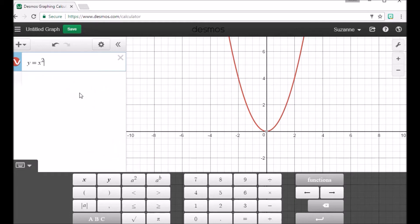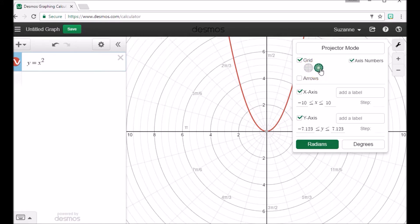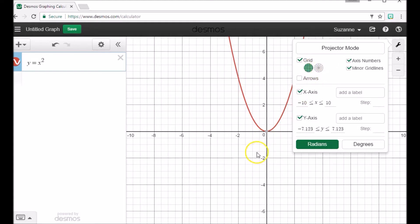So let's say we were going to graph the parent graph of the quadratic here. Now let's go over here to our settings. The grids—later in the course you'll be using the one on the right, that's the polar grid. For right now, pretty much mostly what you're going to use is the Cartesian grid. Now the axis numbers and the minor grid lines, you could uncheck those, but I probably wouldn't. Same thing with the x-axis and y-axis.